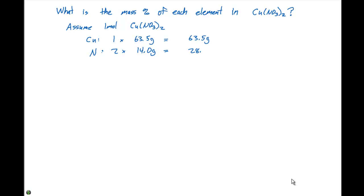That's gonna give us 28.0 grams. The oxygens, there's three times two, or six total, times 16.0 grams, is gonna give us a mass of 96.0 grams. So for every one mole of copper two nitrate, we are gonna have 187.5 grams.